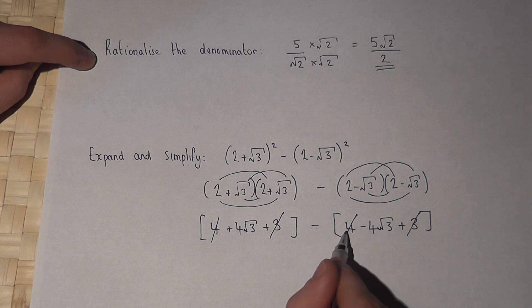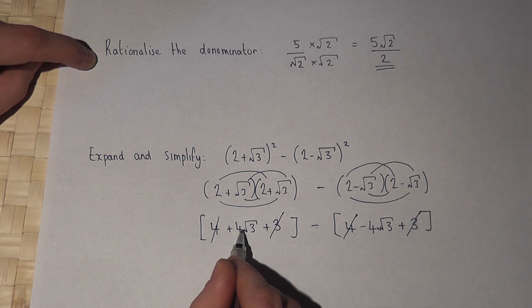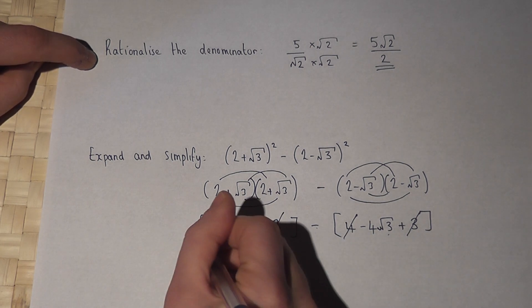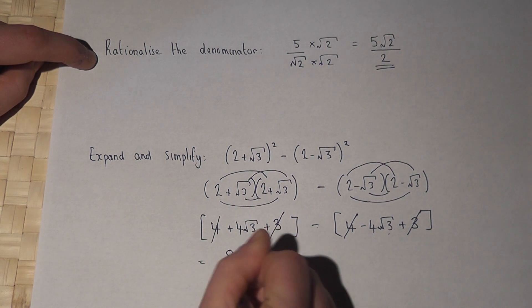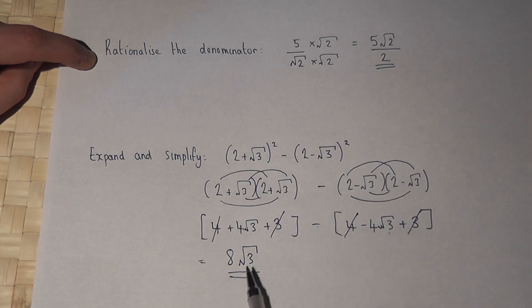Well 2 negatives go positive, so 4 root 3 plus 4 root 3 becomes 8 lots of root 3. So we've expanded and then simplified to get 8 lots of root 3.